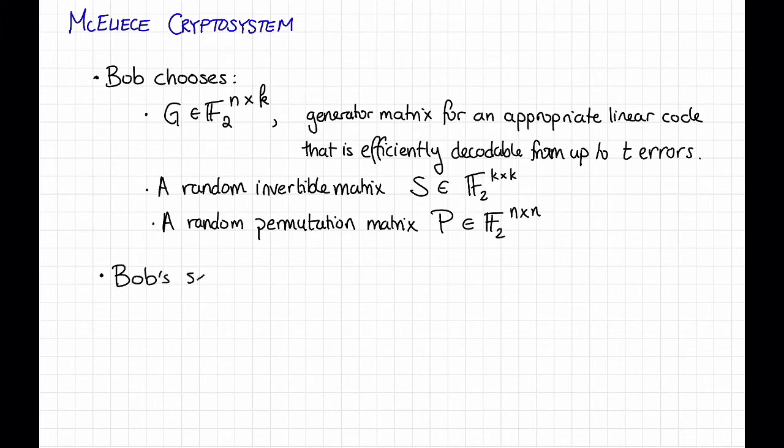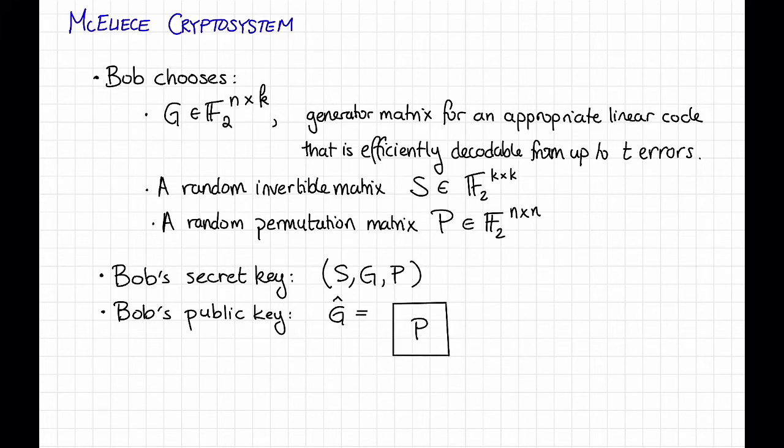So Bob's secret key is just going to be these three ingredients: S, G, and P. Bob's public key, the thing that he's going to publish, is going to be the product of these three ingredients. So it'll be a matrix G hat, which is equal to the permutation matrix P times the generator matrix G for this efficiently decodable linear code times this invertible matrix S.